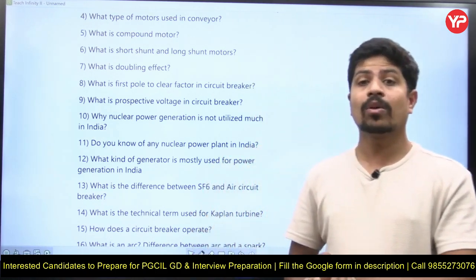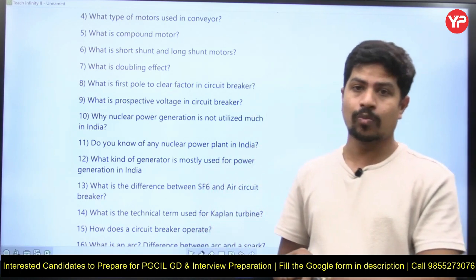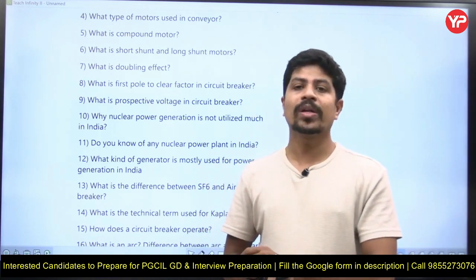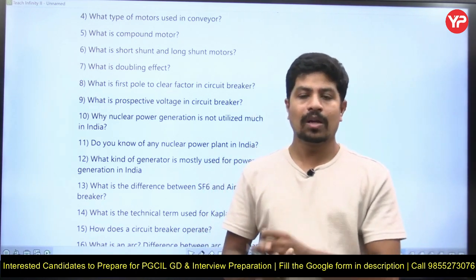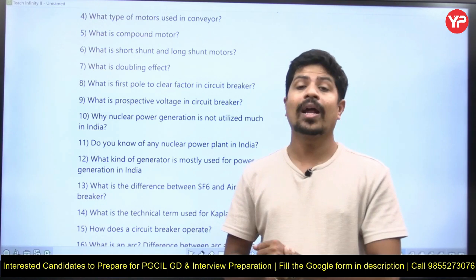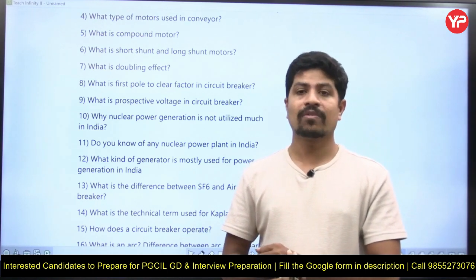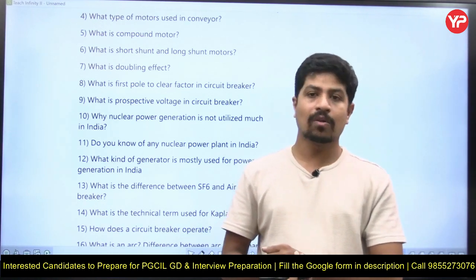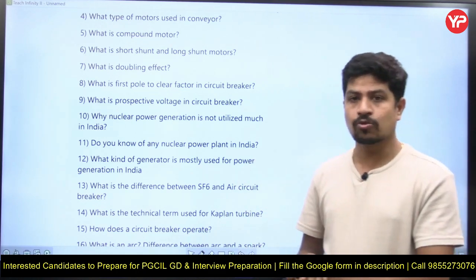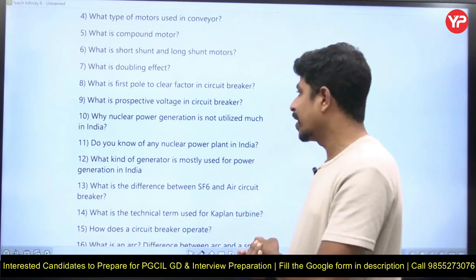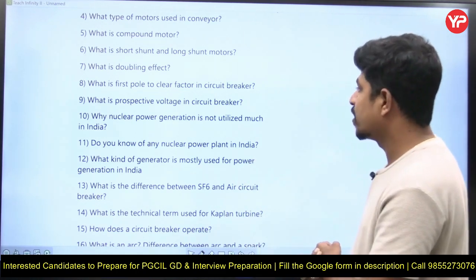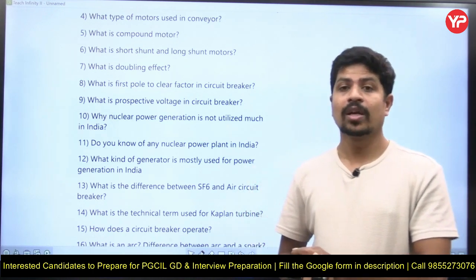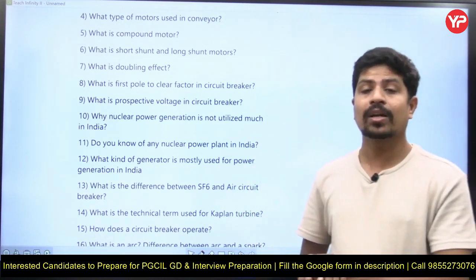How is the first pole to clear factor different for grounded fault and ungrounded fault? What is the significance of that — they will ask you to explain. Next: what is the prospective voltage in a circuit breaker? How is it going to affect the arc extinguishing phenomenon?